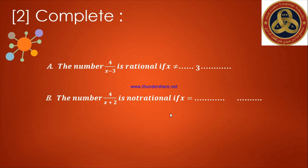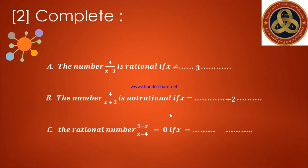Letter B: the number four over (X plus two) is not rational when the denominator equals zero. I search for a number that makes X plus two equal zero — the answer is negative two, so X doesn't equal negative two. Letter C: the rational number (five minus X) over (X minus four) equals zero when the numerator equals zero. What number subtracted from five gives zero? The answer is five, so X equals five.